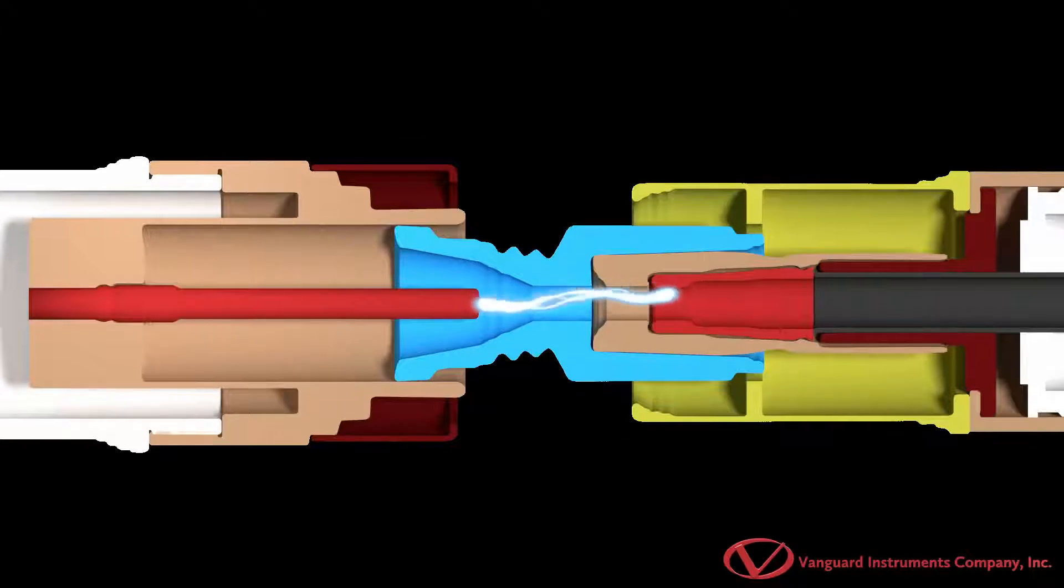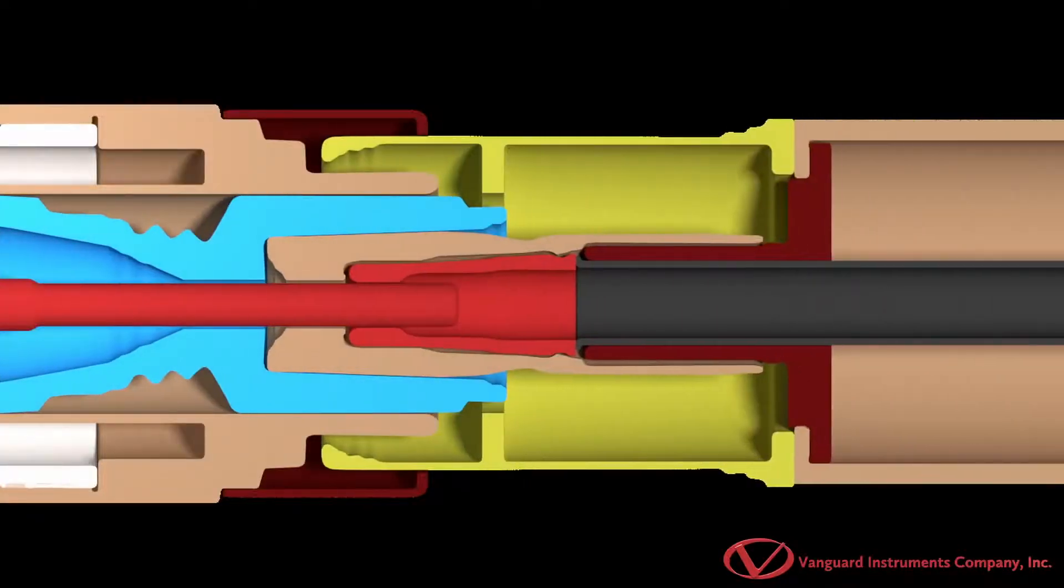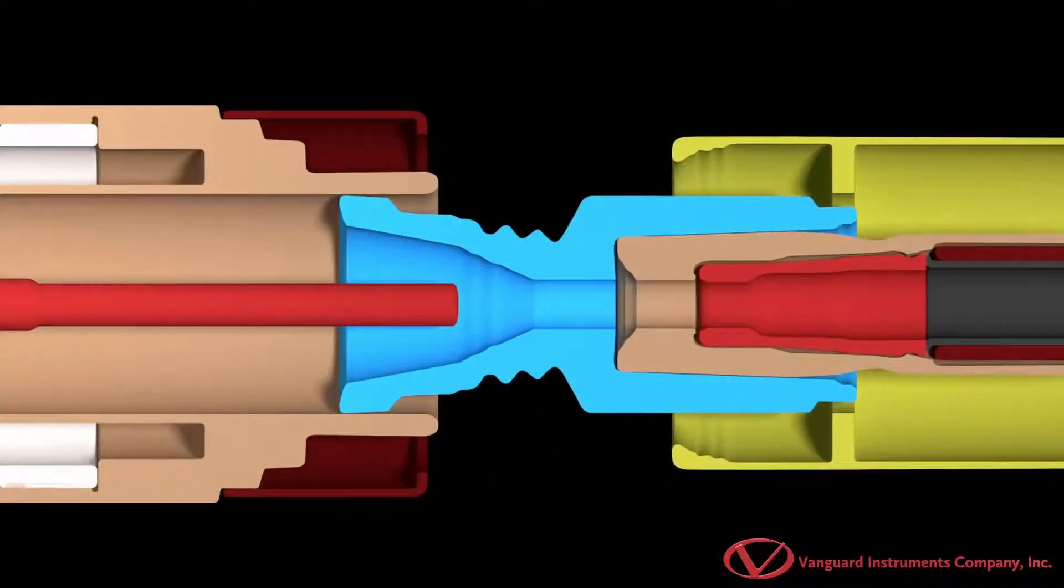In order to avoid arc re-ignition, the contacts must be separated with sufficient speed and the dielectric strength across the open contacts must be able to withstand the transit voltage.